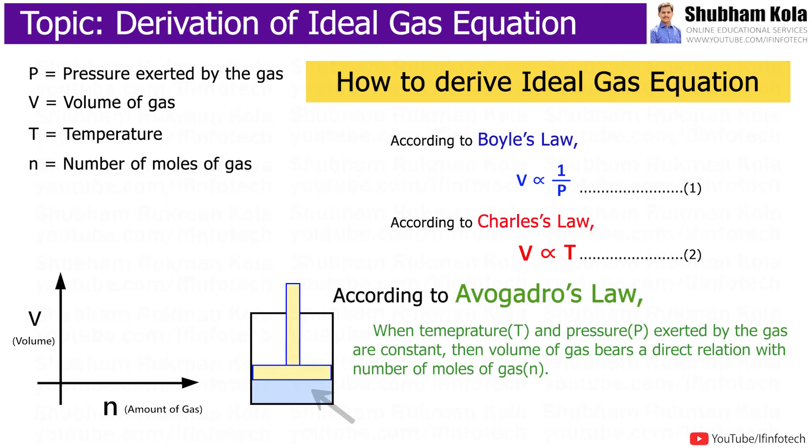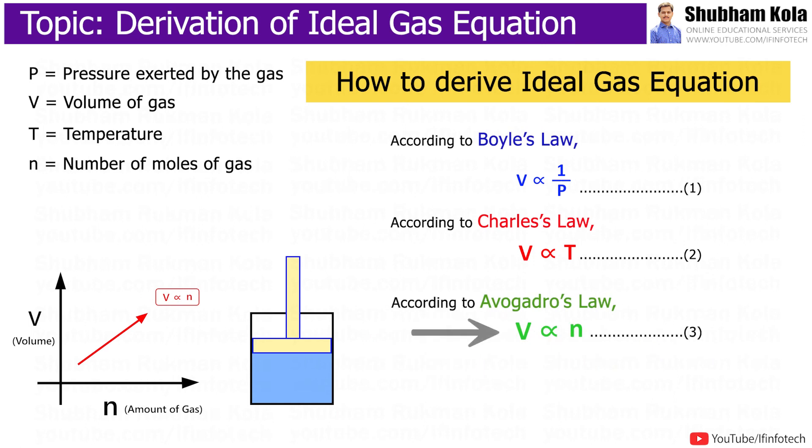And according to Avogadro's law, when temperature and pressure exerted by the gas are constant, then volume of gas bears a direct relation with number of moles of gas. That is, V is directly proportional to N, which is number of moles of gas.